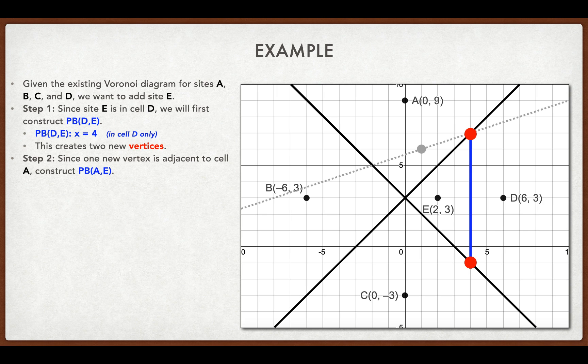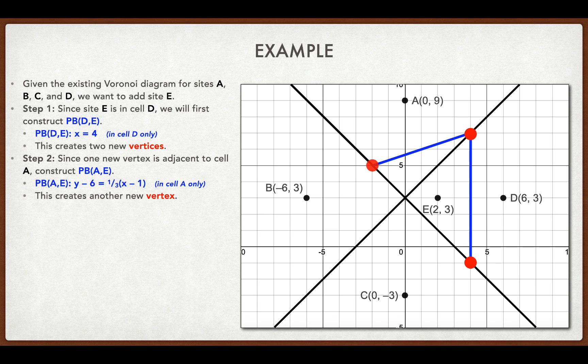I just randomly chose to do the one that is touching cell A. So the perpendicular bisector between sites A and E is drawn in gray there. It has equation y minus 6 equals one-third times (x minus 1), and I've hit another edge so I create a new vertex.